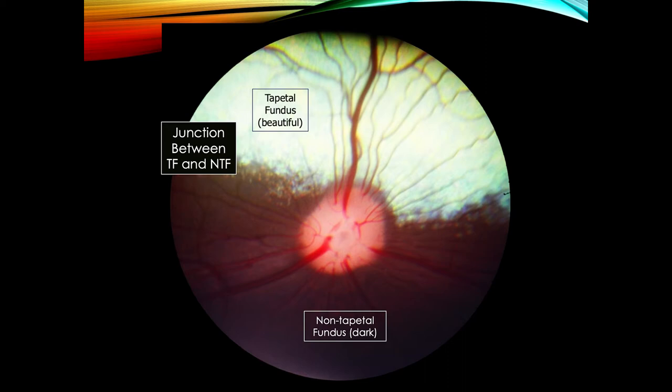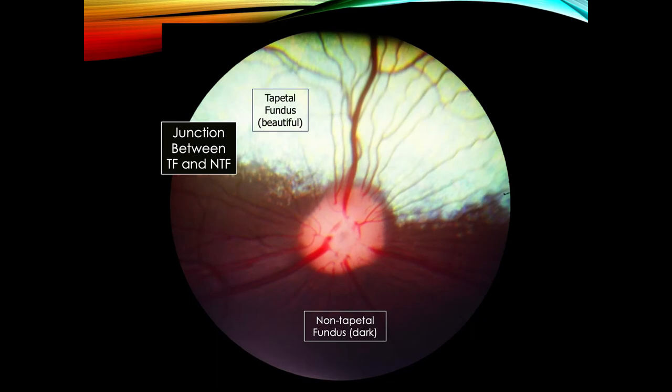The retinal pigment epithelium tends to give you the idea that there's pigment there all the time — and there's not. There are bits with no pigment, bits with variable amounts, and bits with a whole stack of pigment. So we split the classic dog fundus into the tapetal area — the bright colorful structure — where the RPE is transparent, and the non-tapetal fundus, which is dark because there's pigment in the RPE.